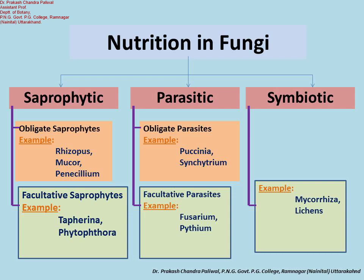Saprophytes are basically of two types: obligate saprophytes and facultative saprophytes. Obligate saprophytes are those fungal organisms which grow only on decayed and dead organic matter of plants and animals. Examples are Rhizopus, Mucor, and Penicillium. Facultative saprophytes are originally parasites, but in the absence of the host they are capable of growing as saprophytes.